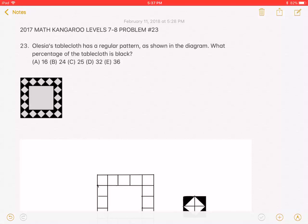This is the 2017 Math Kangaroo levels 7 and 8, problem number 23. Alessia's tablecloth has a regular pattern, as shown in the diagram. What percentage of the tablecloth is black?